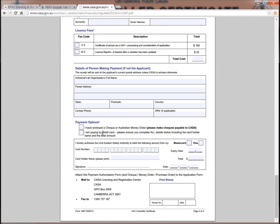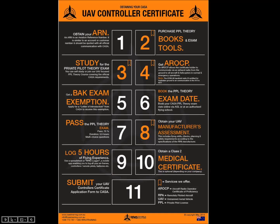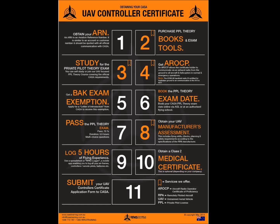These are the basic 11 steps to obtaining your Controller Certificate. To recap: obtain your ARN as soon as possible; purchase the PPL theory books and exam tools; study for the Private Pilot Theory exam — we offer a five-day course and an online course; get an AROCP; get a BAK exemption early; book the exam date as soon as possible; pass the PPL theory exam at 70%; obtain your manufacturer's assessment; log five hours of flying experience on the aircraft type; attain a medical certificate if required; and submit your UAV Controller Certificate form to CASA. All being well, CASA will send back your certificate and you'll be authorised to operate commercially for a company that holds their Operator Certificate.